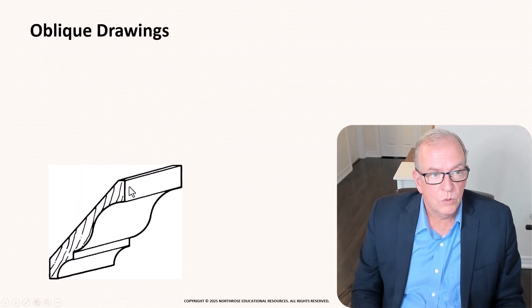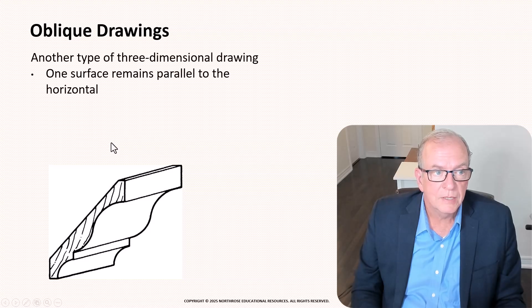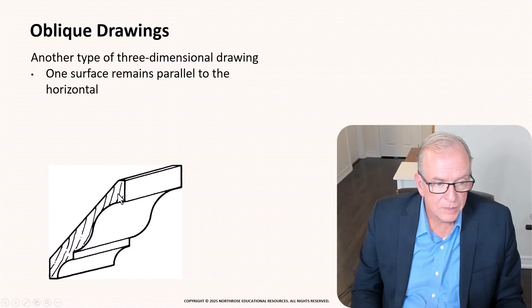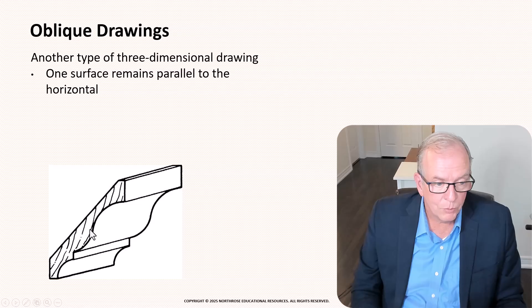The next one is an oblique drawing. So oblique drawings basically one surface remains parallel. So in this case it would be this with the little lines through it that would be basically a straight-on view. So this part here is what we call orthographic but then it goes off on an angle